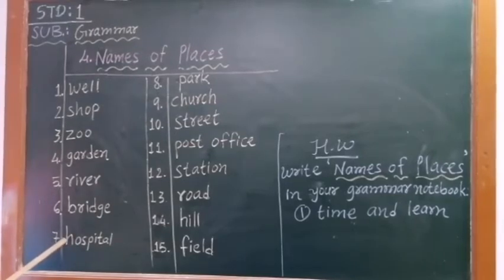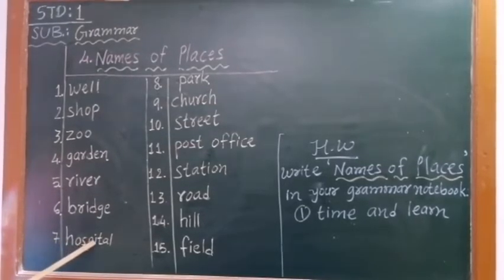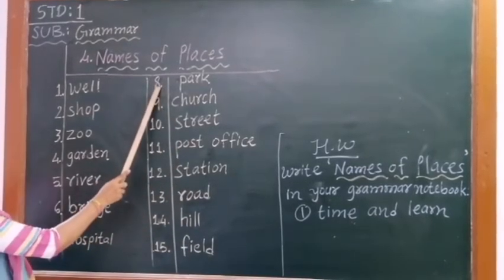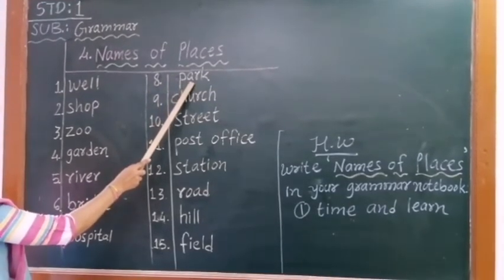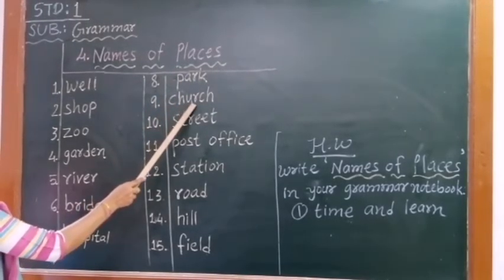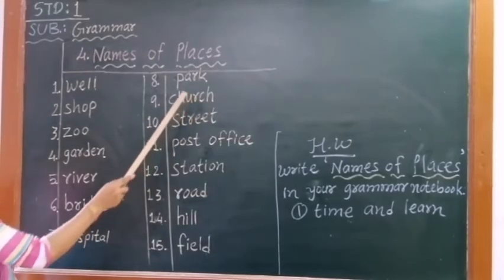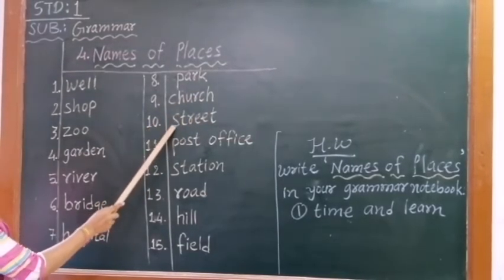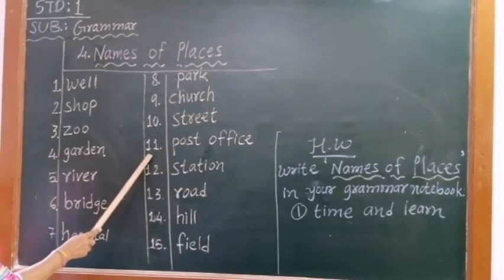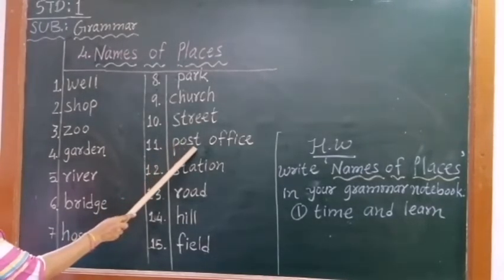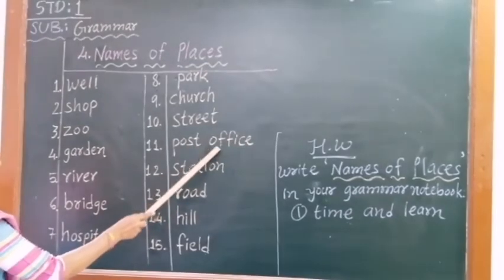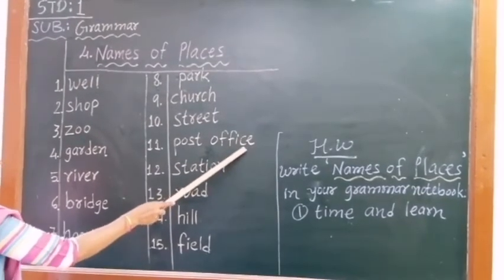Number 7, H-O-S-P-I-T-A-L, hospital. Number 8, P-A-R-K, park. Number 9, C-H-U-R-C-H, church. Number 10, S-T-R-E-E-T, street. Number 11, P-O-S-T, O-F-F-I-C-E, post office.